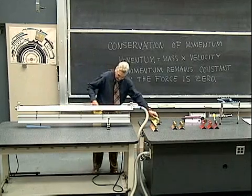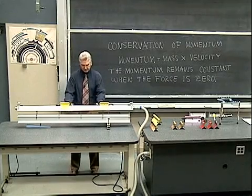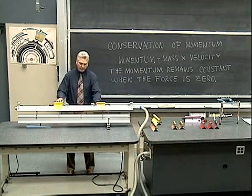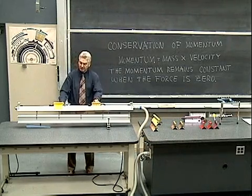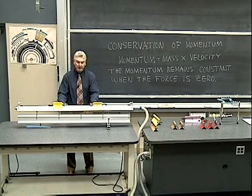Now, if I have two cars of equal mass and they come up and bump into one another, coming from opposite directions, then the momentum of one we can say is positive and the other would be negative in such a way that the total momentum adds up to zero.